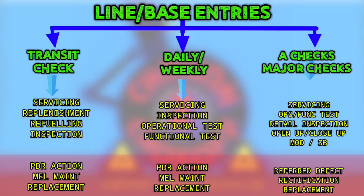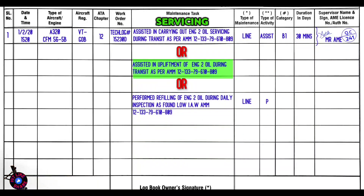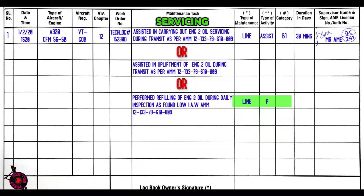Let's see examples of each entry. For servicing: serial number, date and time, type of aircraft and engine — you will mention the engine model number because this task was done on the engine. Aircraft registration, ATA chapter 12 servicing. Work order — you will mention either the tech log number or tech log page number because this task was done in transit, so transit doesn't have a work order. The terminology used can be: assisted in carrying out engine oil servicing during transit, or assisted in upliftment of engine oil during transit, or if done in daily, perform refilling of engine oil during daily inspection as found low. If you are performing it write perform; if assisted, write assist.